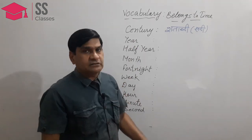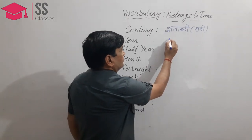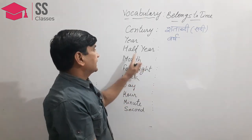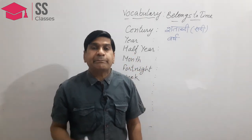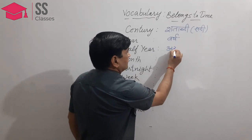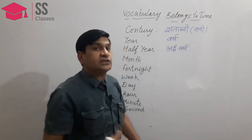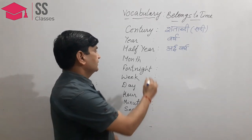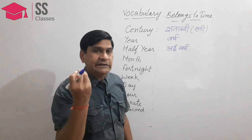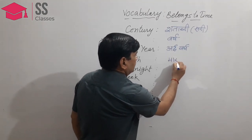Next, year — a period of 12 months. Half year is a period of 6 months. Month is a period of 30 or 31 days. In Hindi, month means maas or maheena.